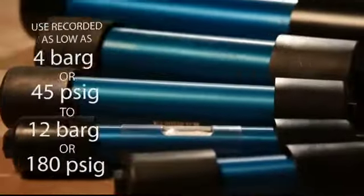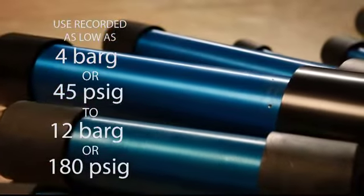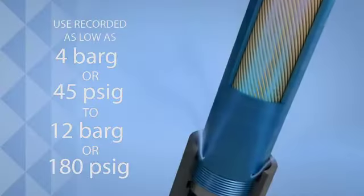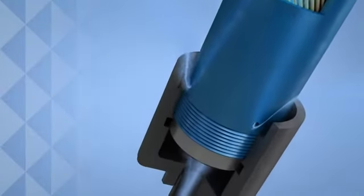While use has been recorded as low as 4 bar G or 45 PSIG, up to 12 bar G or 180 PSIG, higher pressures improve dehydration while lowering purge.